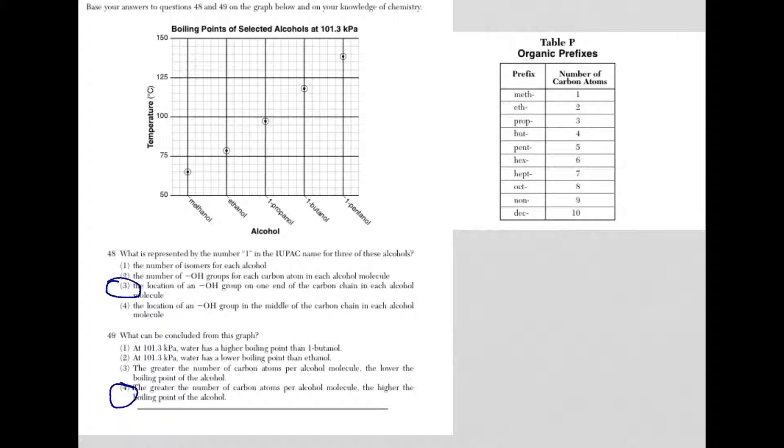So in 48, it's asking about the number 1 in the IUPAC name for these three alcohols. We have a graph of boiling points for alcohols, and we're supposed to use that for questions 48 and 49.